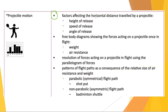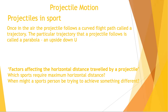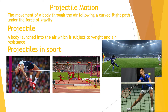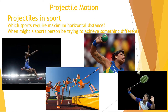On the specification, we're looking at factors that affect the horizontal distance travelled by a projectile. We need to think about sports where we want maximum horizontal distance. Think of some examples where an athlete launches either themselves or an implement into the air wanting it to travel as far horizontally as possible. An obvious example is the long jumper, who takes off from the ground wanting to travel the maximum horizontal distance while in the air.